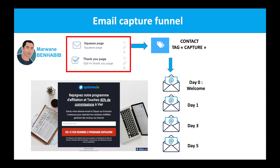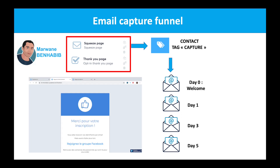You will create with System.io a squeeze page on which you will present your offer, your product, or your training course, for example. On which you will put a video, then an email field and a call to action to let your prospect subscribe to your email list.